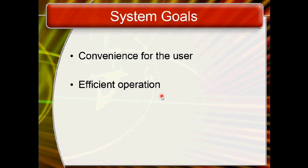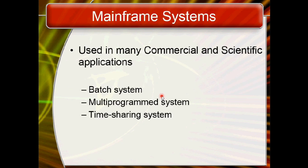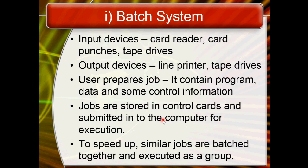We are going to see different kinds of systems. The first one is the mainframe system, used in commercial and scientific applications. There are three types of mainframe systems: batch system, multi-programmed system, and time sharing system.